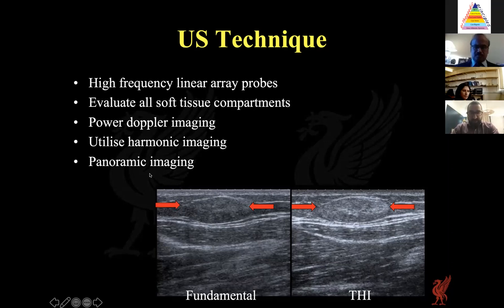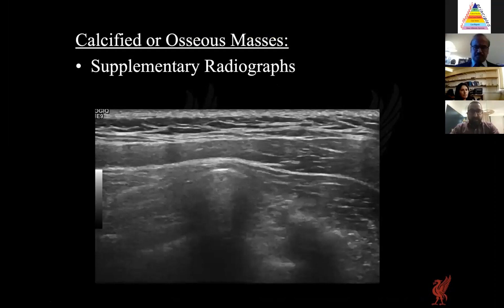When lesions are getting somewhat larger — around eight to ten centimetres or more — you can utilise a panoramic facility to gain an overall size of the lesion. Ultrasound is great for soft tissue lesions, but it's not as good for defining ossified lesions, and on occasion you'll need to use supplementary imaging modalities.